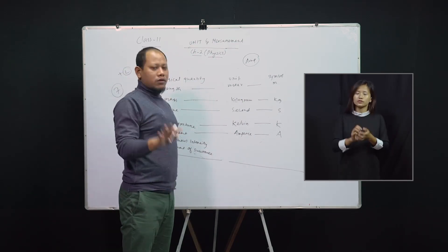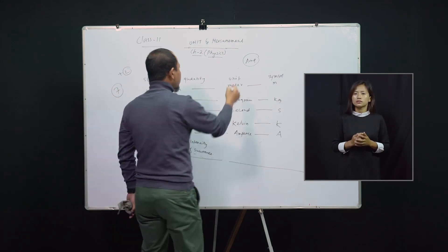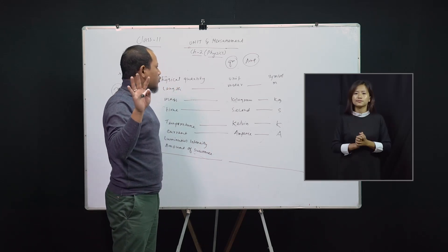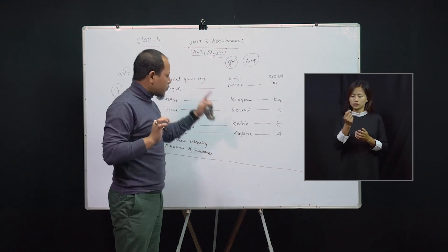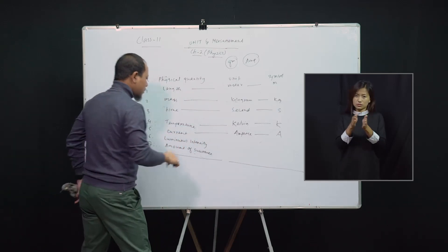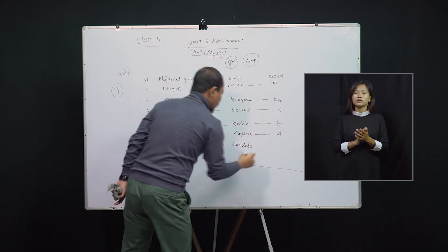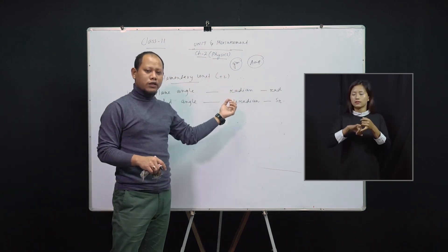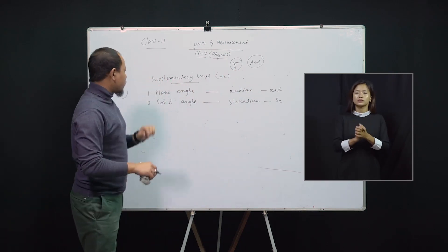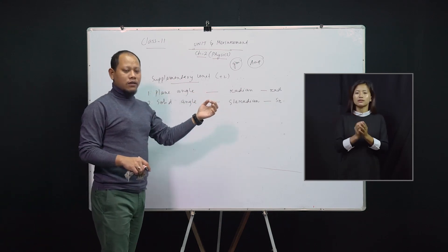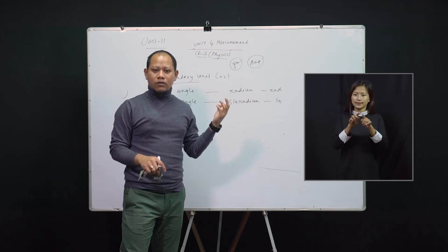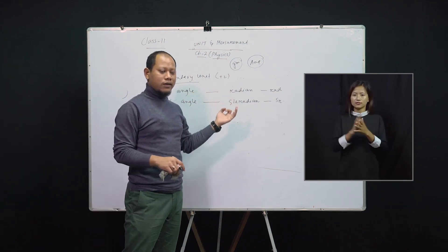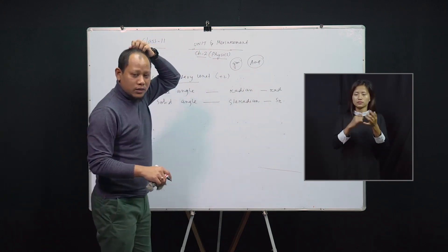Note: writing 'amp' for ampere is technically wrong; the correct symbol is just A. Similarly, writing 'gm' for gram is wrong — the correct symbol is simply g. Luminous intensity is candela, with symbol cd. Now for supplementary units: SI has 7 fundamental plus 2 supplementary units. The supplementary quantities are plane angle, measured in radian, and solid angle, measured in steradian (abbreviated sr).